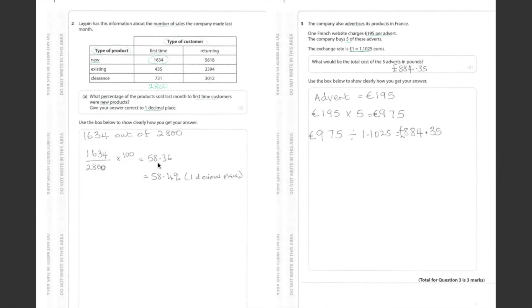Give your answer correct to 1 decimal place. 1 decimal place, that is going to be 0.3. But if we look at 6, 6 is more than 5, so we round up. 3 is going to be 4. Therefore, the answer is 58.4%.